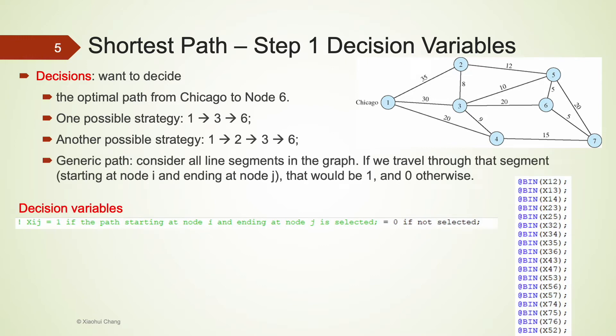A generic path would consider all line segments in this graph. If the path includes a particular line segment, we would assign 1 to that segment. If the path does not include a line segment, we would assign 0 to that segment. That means we would have to consider all line segments. There are quite a few of them.